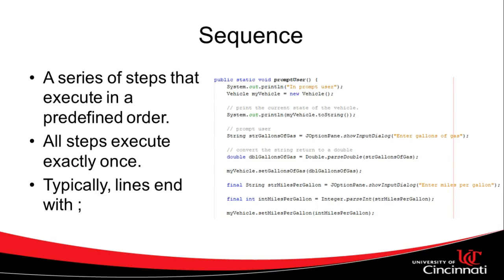So let's start with sequence. Sequence are a series of steps that occur in a predefined order. All steps are going to execute exactly one time. No more, no less. These lines are typically going to terminate with a semicolon in the Java programming language. There are some programming languages like Kotlin where semicolon is optional. But nonetheless, in Java, the steps, not the method, but the steps itself will terminate with a semicolon.